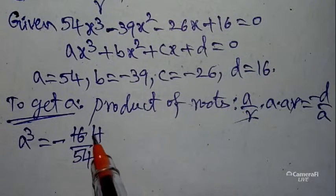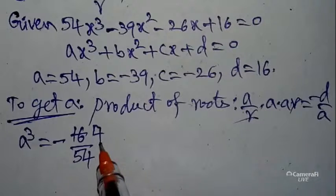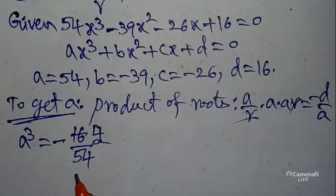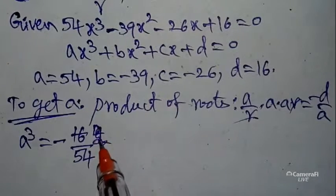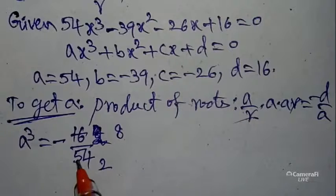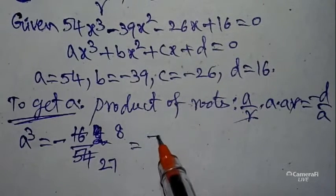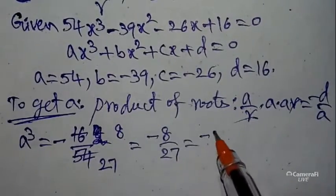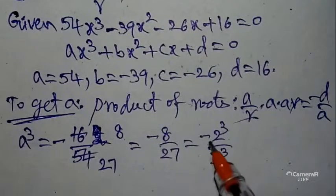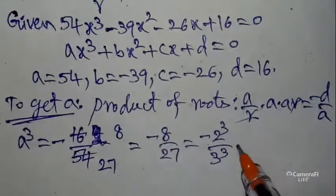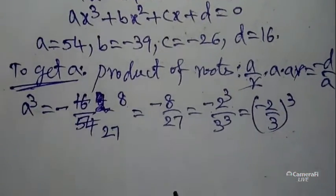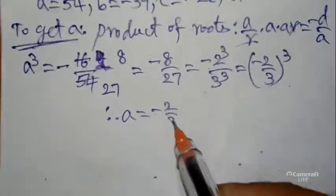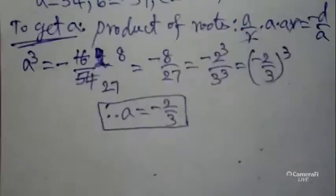Simplifying −16/54: taking cancellation, 2 times 8 are 16, and 2 times 27 are 54, giving −8/27. Now −8/27 can be written as −2³/3³, which equals (−2/3)³. So a³ = (−2/3)³, therefore a = −2/3. We have found the value of a.